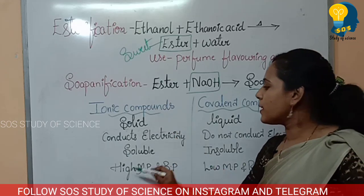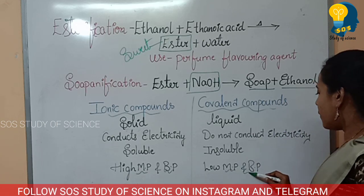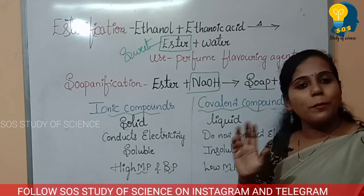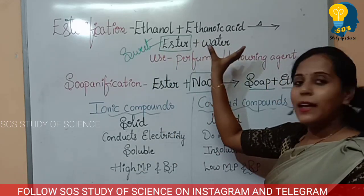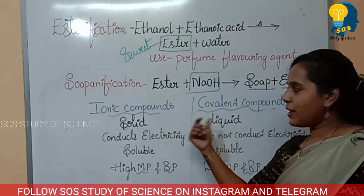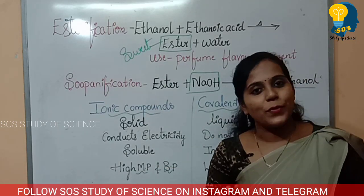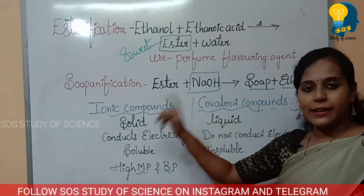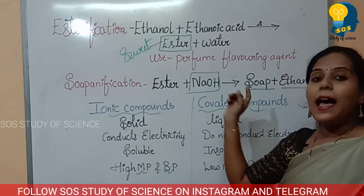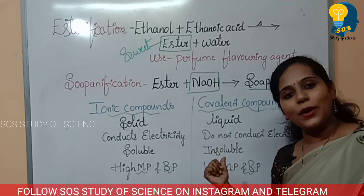Ionic compounds have high melting point and boiling point. Covalent compounds have low melting point and low boiling point. So it is: solid vs liquid, conducts electricity vs does not conduct, soluble vs insoluble, high MP and BP vs low MP and BP.